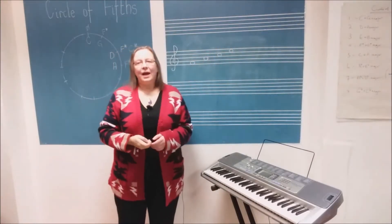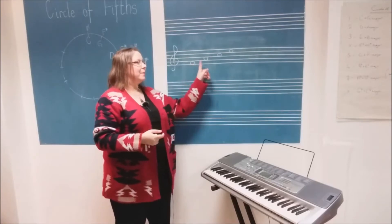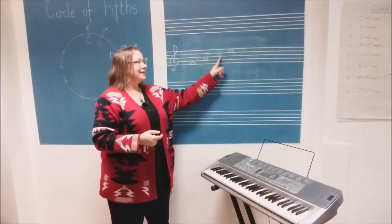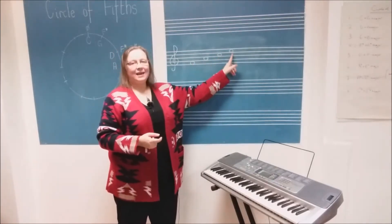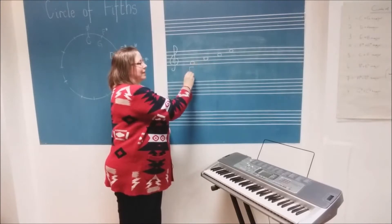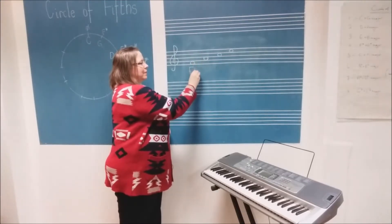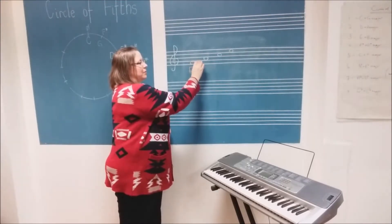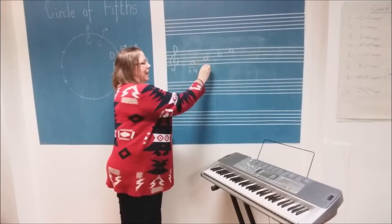The line notes are called F, A, C and E. The note we had on this line was G4. So the one below is F4 and the one above G is A4.